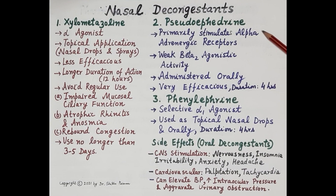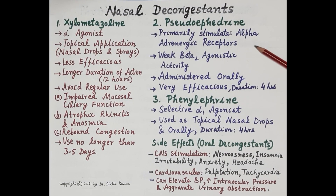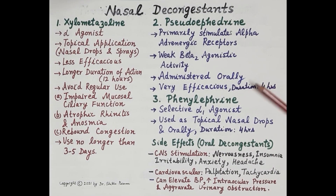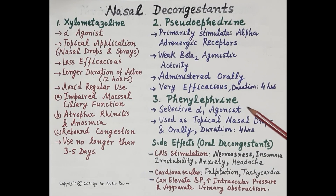The next nasal decongestant is pseudoephedrine. It primarily stimulates alpha adrenergic receptors, and stimulation of alpha-1 adrenergic receptors is responsible for constriction of blood vessels in the nasal mucosa. It also possesses weak beta-2 agonistic activity. It is administered orally, is highly efficacious, and has a duration of action of four hours.